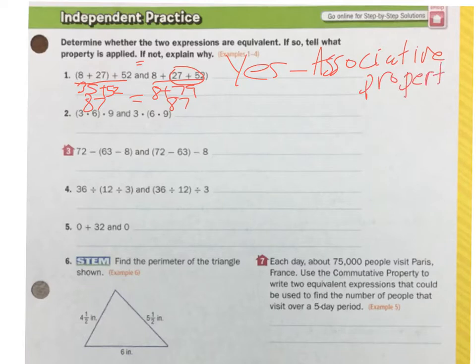So they are equal. So we're going to put a big yes there. And what is the property? It is the associative property. And that property tells us that they're in the same order, just grouped differently. We do this first over here, we do this first over here. But because it's addition, and it's the associative property, they're equal.